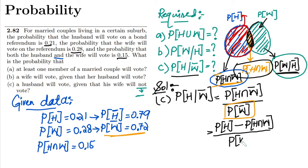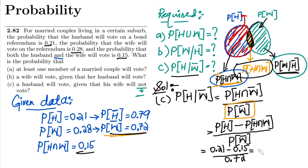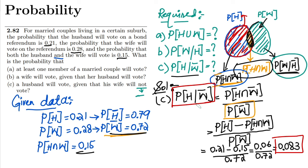Now putting the values into the conditional probability formula: P(H | W') = [P(H) − P(H ∩ W)] / P(W') = (0.21 − 0.15) / 0.72 = 0.06 / 0.72 ≈ 0.083. That is the probability that the husband will vote while his wife will not vote — the solution to Part C, which was trickier since the value had to be derived from the given data.